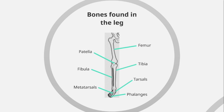To recap the leg section, we have: the femur, the patella, the tibia, the fibula, tarsals, metatarsals, and phalanges. It's important that you not only know the correct anatomical name for each bone, but also where these bones are located. If you need to look back at this video to remember both the names and locations, make sure you do so.